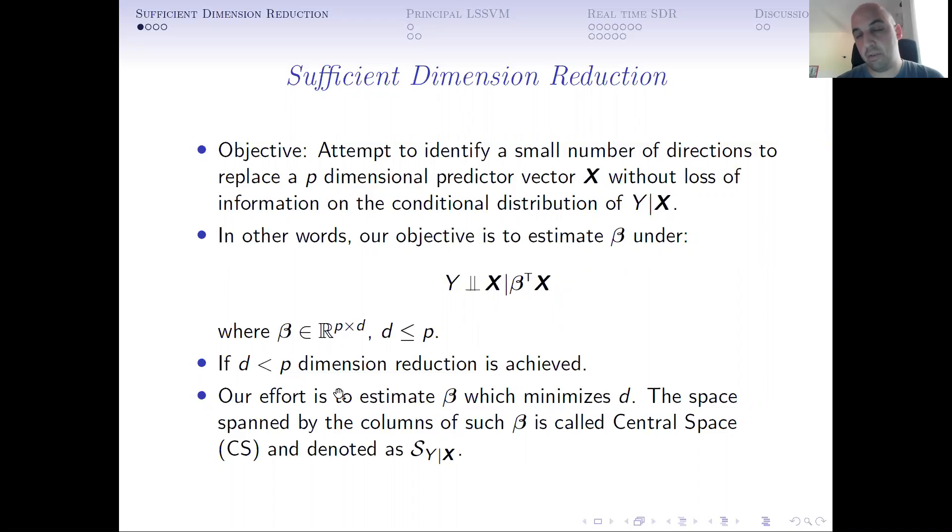If d less than p dimensional reduction is achieved, our effort is to find the one that minimizes d, the beta that minimizes d. The columns of such beta is a space that is called the central subspace, and we denote it with this script as S_{Y|X}.